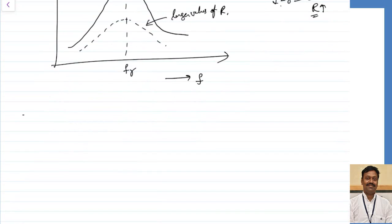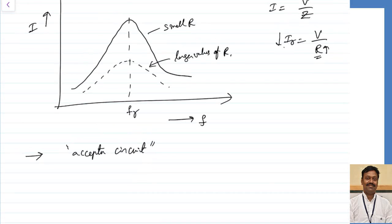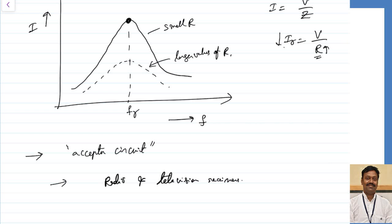The series resonance circuit is also called an acceptor circuit because at resonance condition the current is maximum — it accepts that particular frequency and virtually rejects the remaining frequencies. We can define a bandwidth of frequencies we want to accept based on how much current or power we allow. This circuit is used in radio and television receivers.